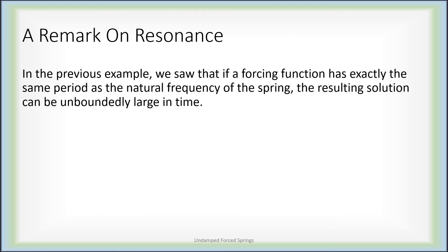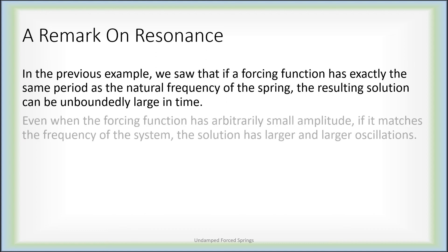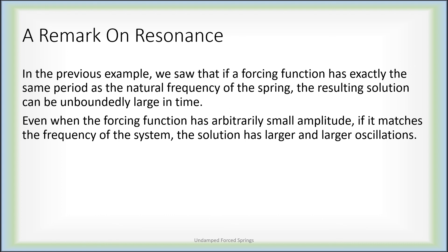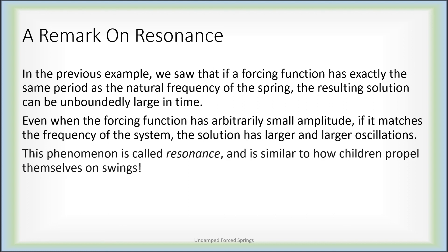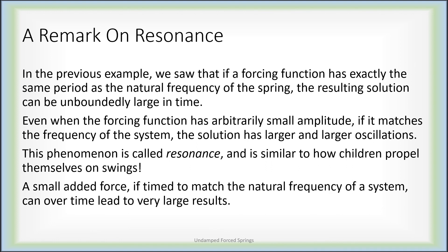When the forcing function has exactly the same period as the spring system does naturally, the resulting solution can be unbounded in time. Even when the forcing function has extremely small amplitude — the constant q was kind of irrelevant to determining that the solution was unbounded — if it perfectly matches the natural frequency of the system, the overall solution will have larger and larger oscillations in time. This is called resonance, and it's similar to how kids learn to propel themselves on swings: a small added force is timed to match the natural frequency of the system, and over time that can really add up.